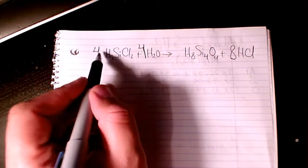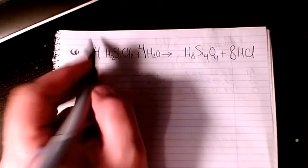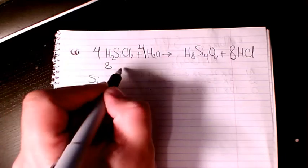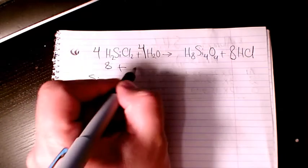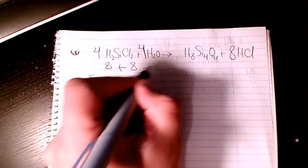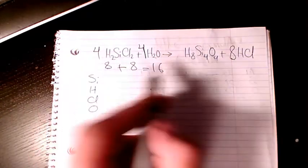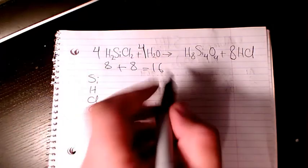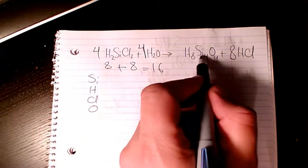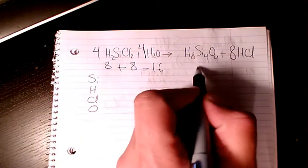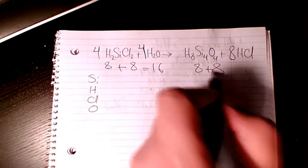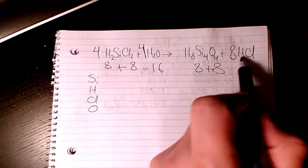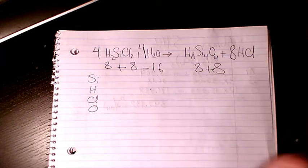So let's check the hydrogen. Hydrogen: four times two is eight, plus four times two is going to be 16 on this side. And eight plus eight is 16 on the other side as well.